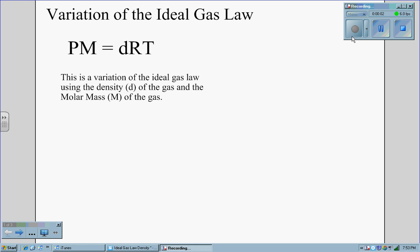Variations on the Ideal Gas Law. The second variation of the Ideal Gas Law is PM equals DRT. This is a variation of the Ideal Gas Law using the density of the gas and the molar mass of the gas.